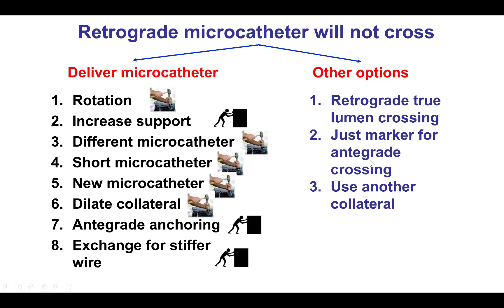Another option is to leave the retrograde wire as a marker for an antegrade wire to get through. A third option is to use another collateral, which is actually what was done in this case.